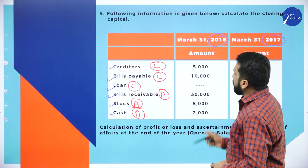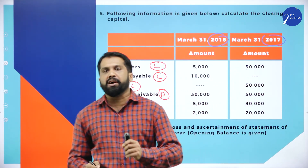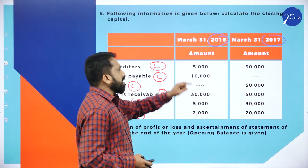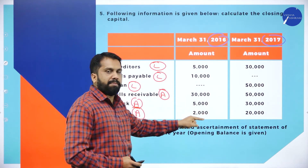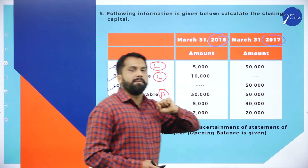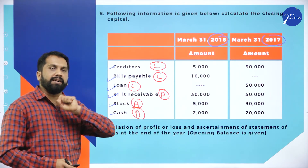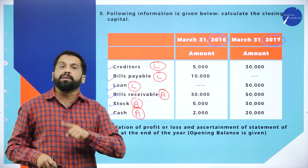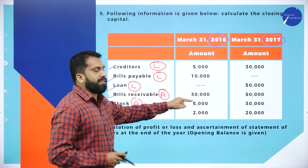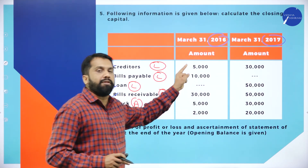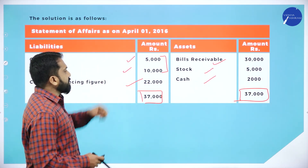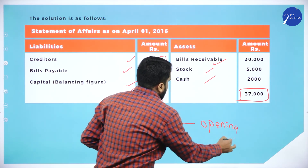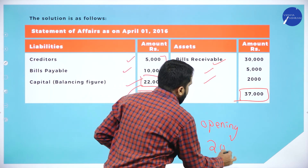To find opening capital for 2017: whatever closing capital is for 2016 becomes the opening capital for 2017. Think of it this way — if you have 1,000 rupees today (closing), tomorrow morning that same 1,000 is your opening balance. Similarly, the closing capital of 2016 is 22,000, and that 22,000 becomes the opening capital for 2017.